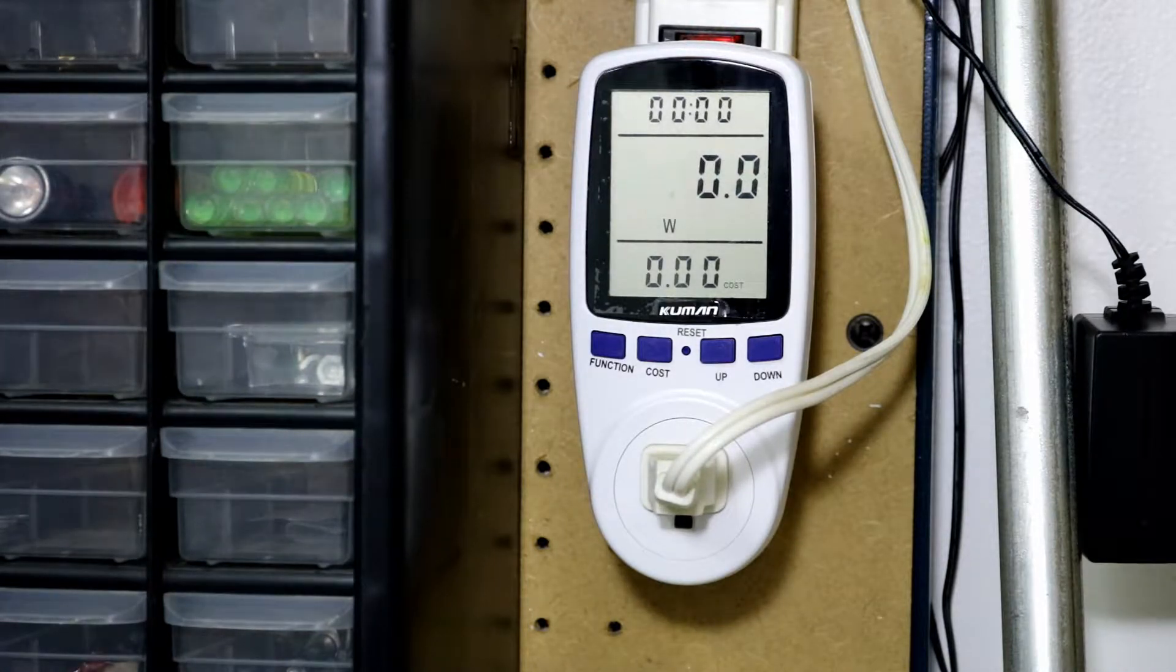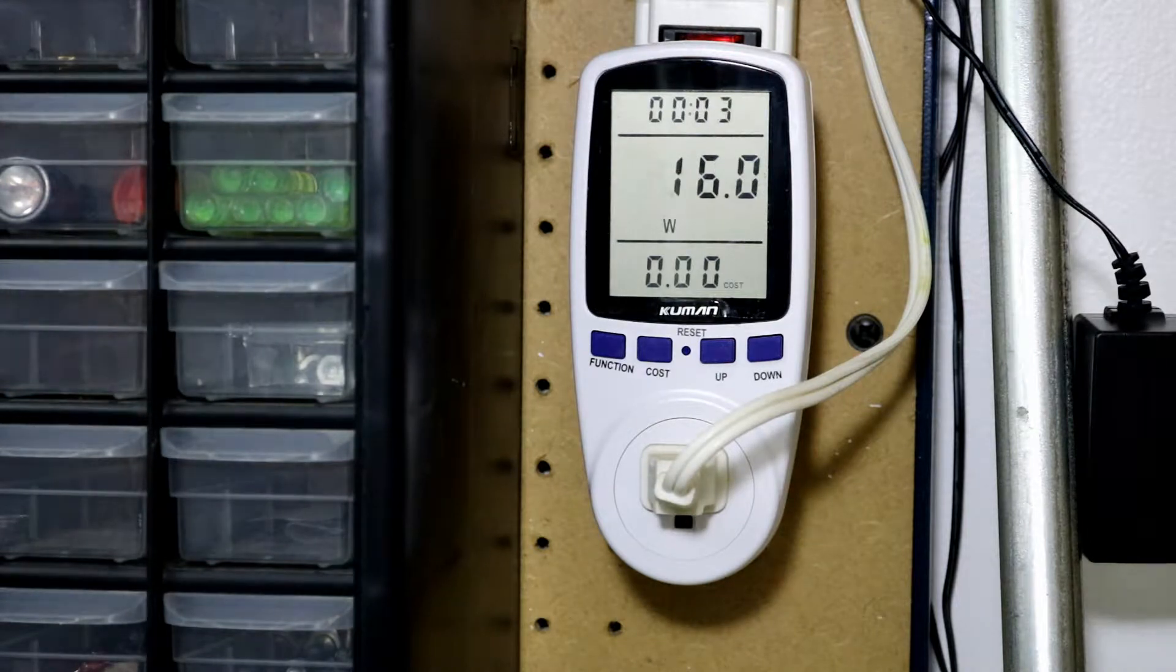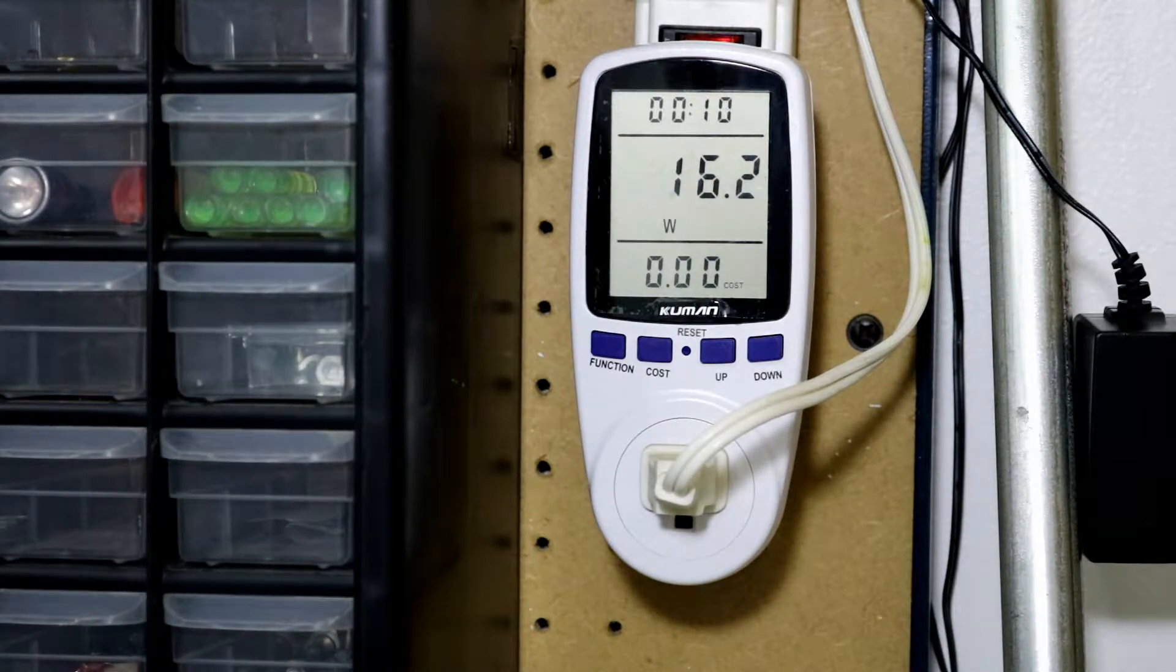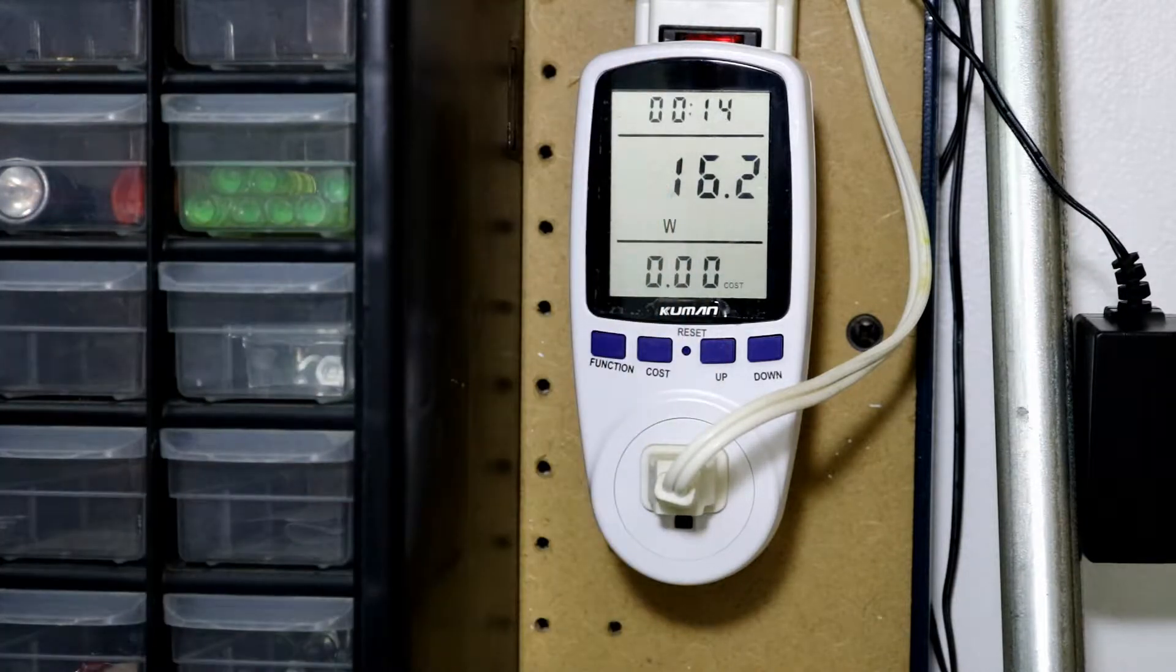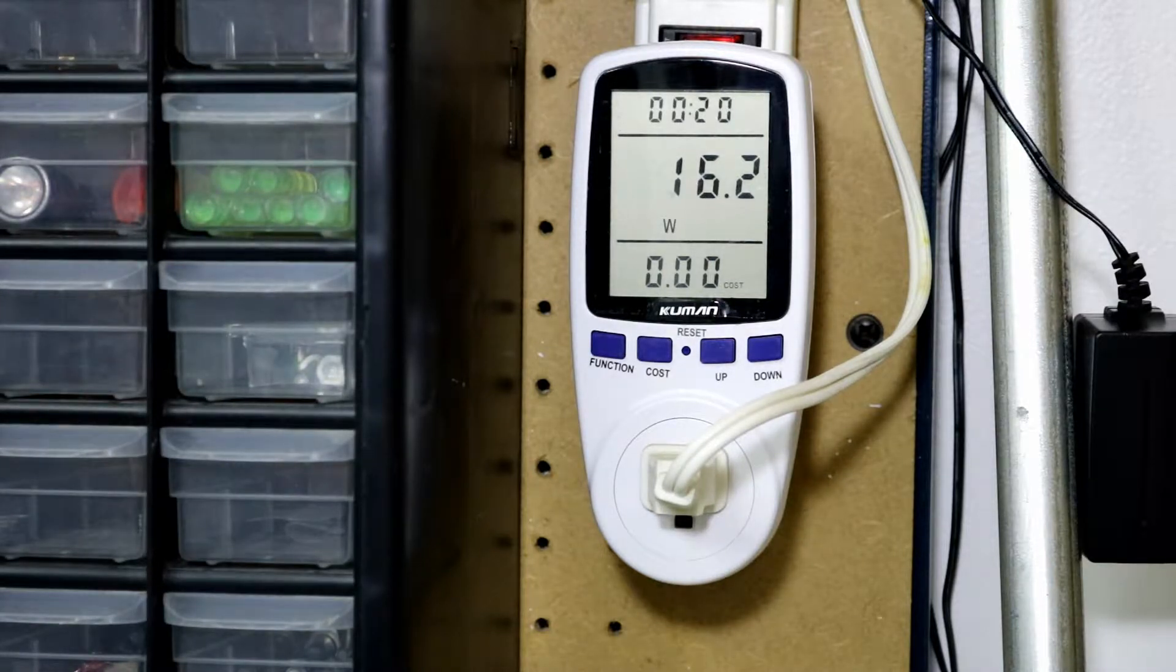I'll have to double check to see what the actual cost of the electricity is and adjust that accordingly. But for testing, let's have a look. Let's turn on my light. It's warming up. So what do we got? 16.3, 16.2 watts. It's actually got the time on there as well.